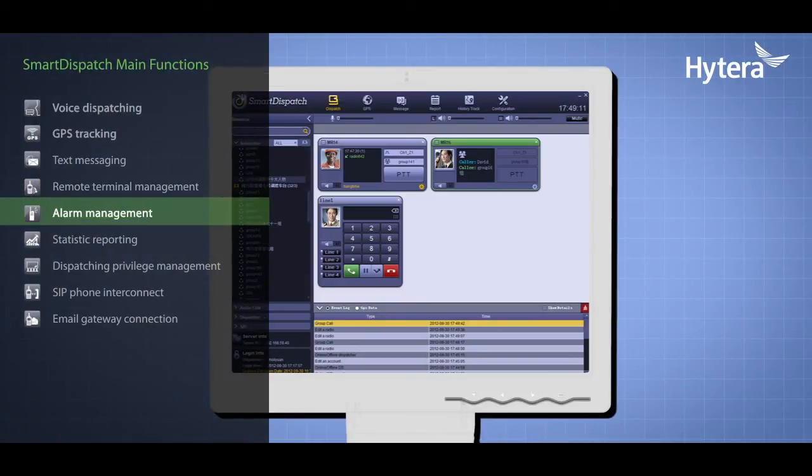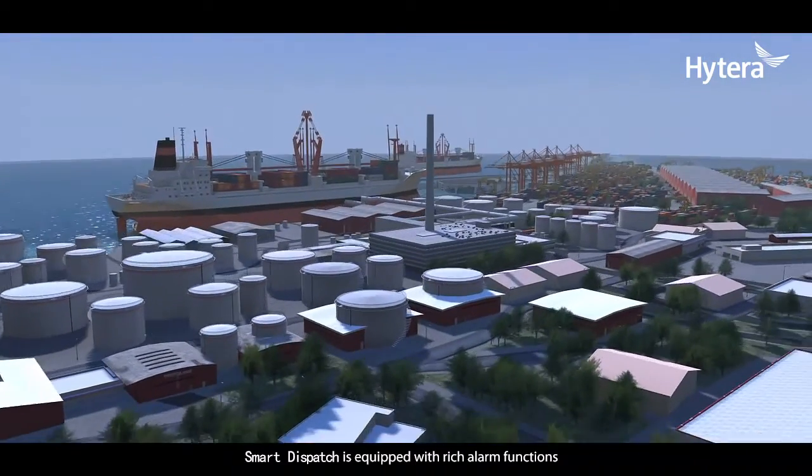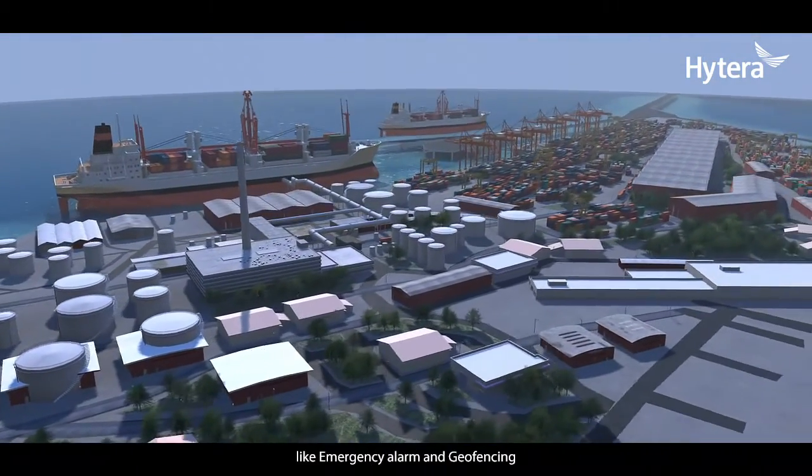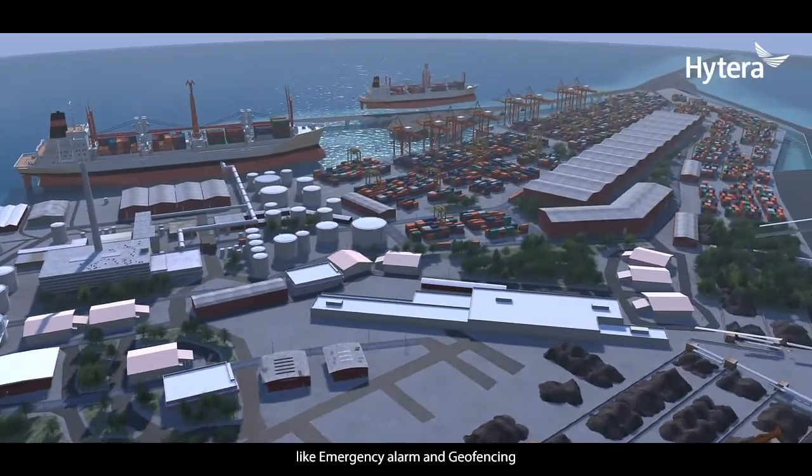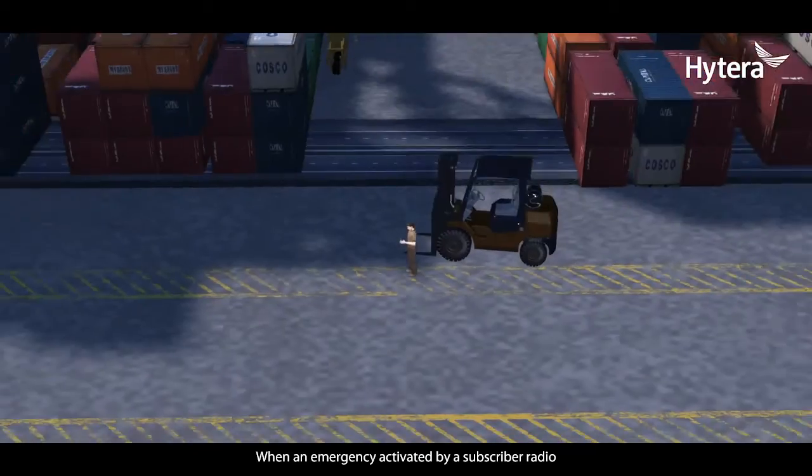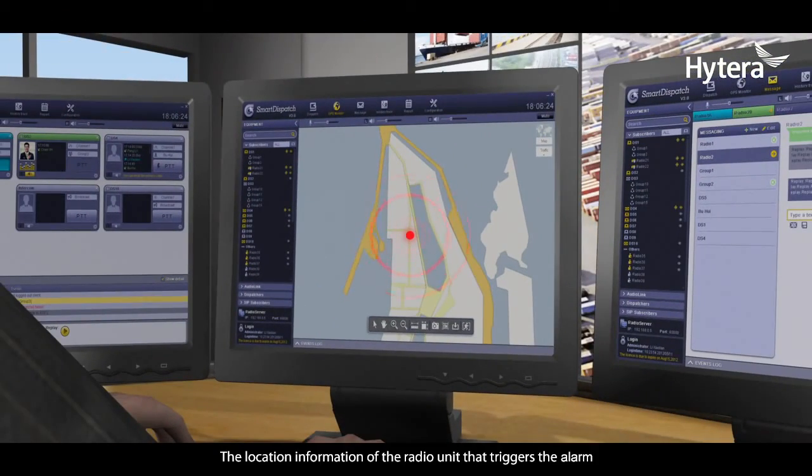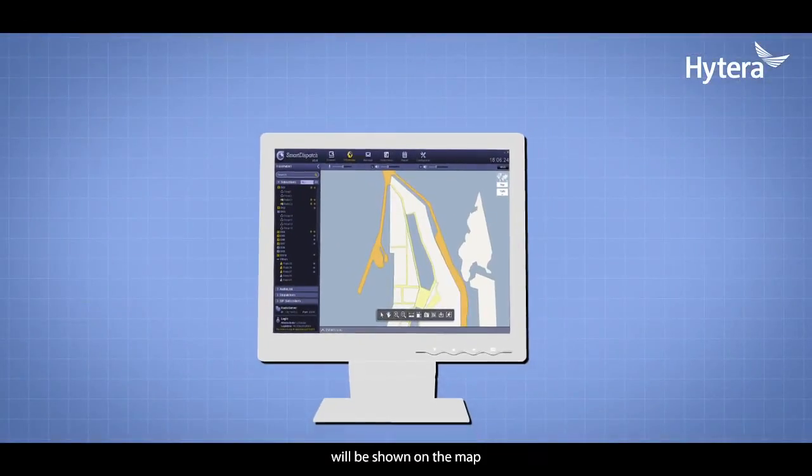Alarm Management: Smart Dispatch is equipped with rich alarm functions like emergency alarm and geofencing. When an emergency is activated by a subscriber radio, the Smart Dispatch will trigger an alarm. The location information of the radio unit that triggers the alarm will be shown on the map.